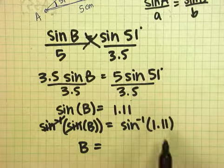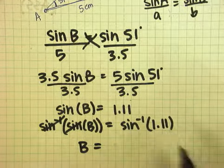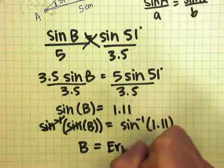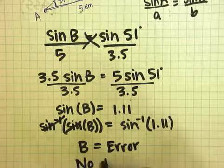Now the reason it says error is because 1.11 is too big. It's not on the unit circle. And so what this is telling you is that no triangle is possible.